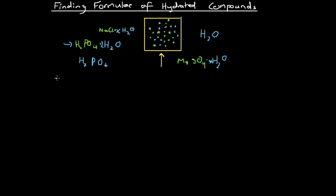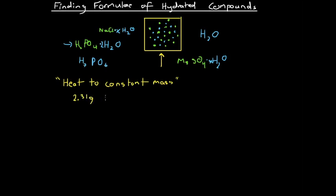What we do — because we're dealing with water — is we heat to constant mass. We weigh our sample, heat it to 110 degrees Celsius, let it cool, and then see how much water has evaporated by weighing it again. We repeat this cycle until our weight measurement is the same on two consecutive cycles. At this point, it means no more water has evaporated, and all the water's gone — we're just left with magnesium sulfate.